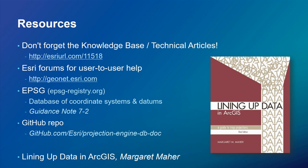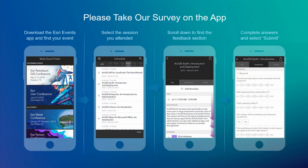Finally, there are two — actually three — editions now of Margaret Mayer's book, 'Lining Up Data in ArcGIS'. Margaret works in tech support and is the top resource for coordinate systems and transformations. There's a whole chapter on getting CAD data to work with GIS data. Please take the survey and give us feedback on this presentation.